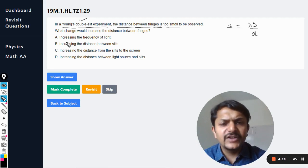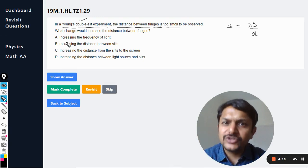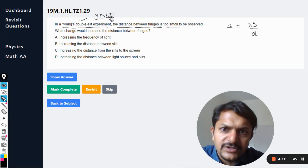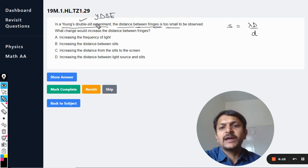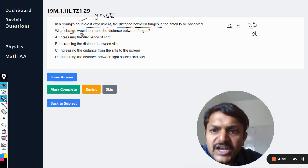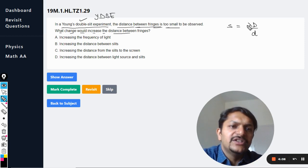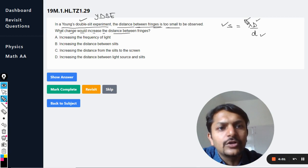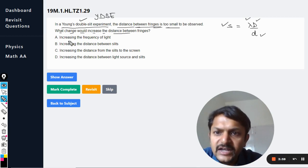Like the interference pattern due to two parallel rectangular slits, that is called Young's double slit experiment. It is also written as YDSE sometimes. So what change would increase the distance between the fringes? You want this to increase. Definitely either the d will decrease, wavelength can increase, or the capital D can increase. Let us see.